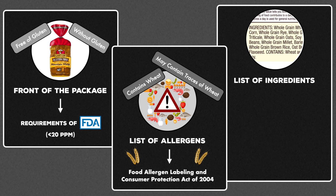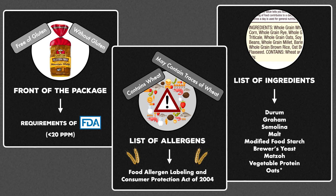The third place to look is the list of ingredients. The ingredients are sometimes listed as a species or derivative of these grains, so it's important to know various keywords that indicate the presence of gluten, like durum, graham, semolina, malt, modified food starch, brewer's yeast, matzah, and vegetable protein. Oats can also be included on this list unless it's specified that they're gluten-free.